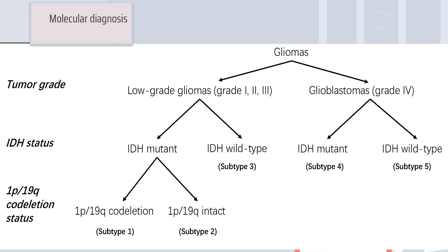Glioma is graded from grade one to grade four glioblastoma multiforme. It is classified based on IDH — isocitrate dehydrogenase — mutation or wild type. In glioma and glioblastoma, it may also be associated with co-deletion of 1p/19q.